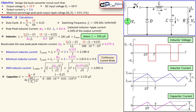The capacitor value is given by an expression involving the duty cycle, the inductance, the ripple ratio, and the switching frequency squared. Substituting the values with L equal to 300 microhenries gives 3.125 microfarads. This is the minimum required capacitance, and we select exactly this calculated value.